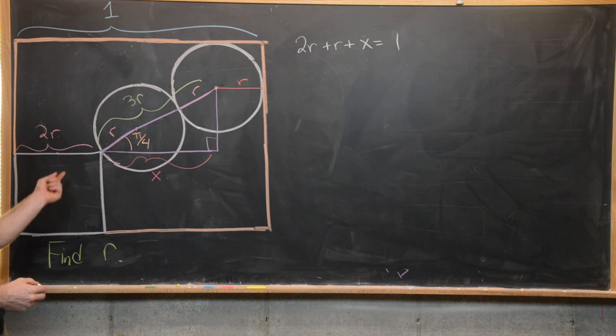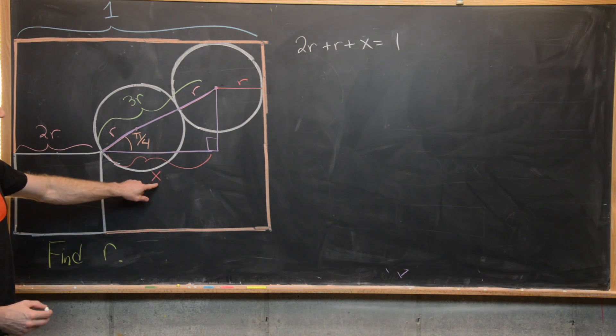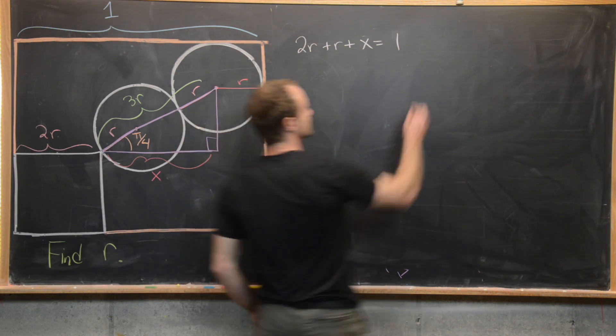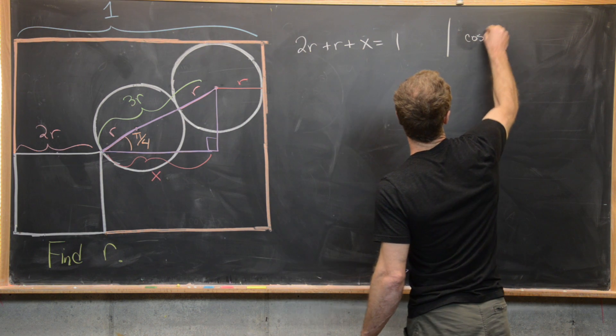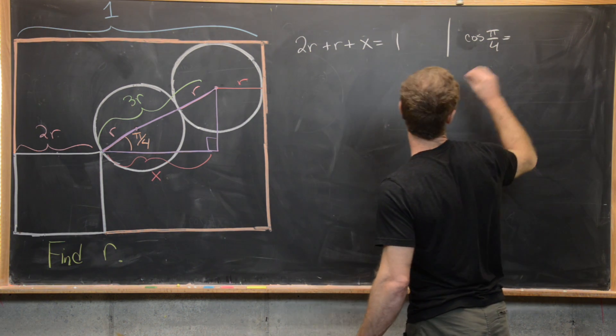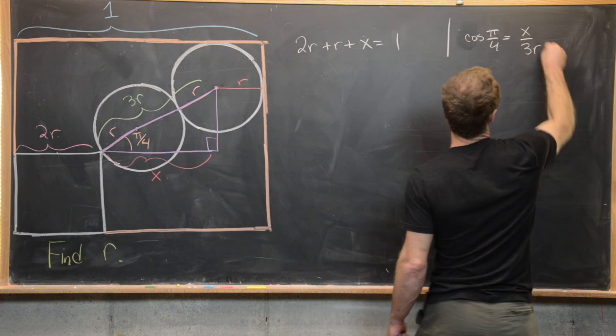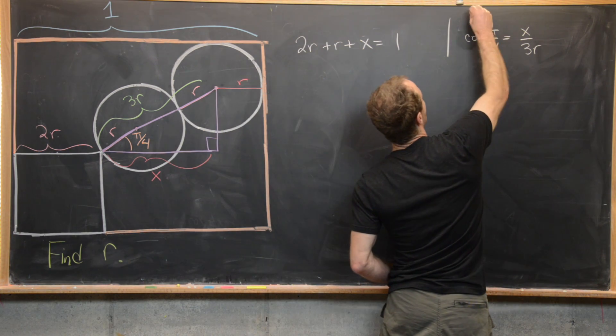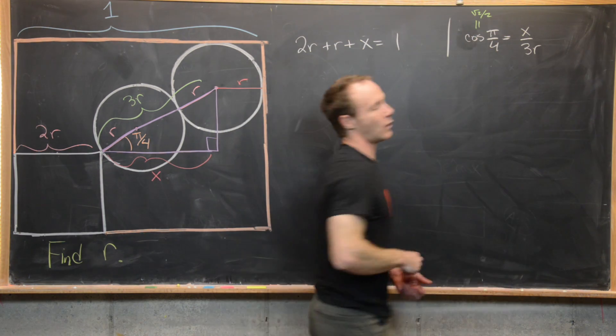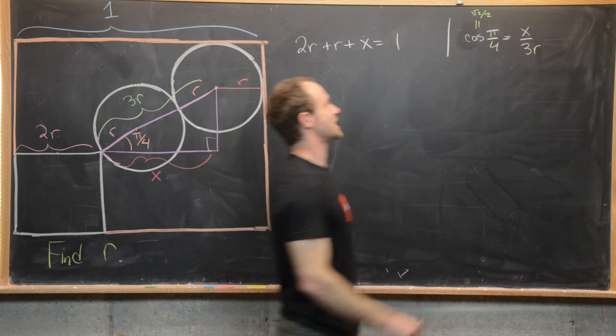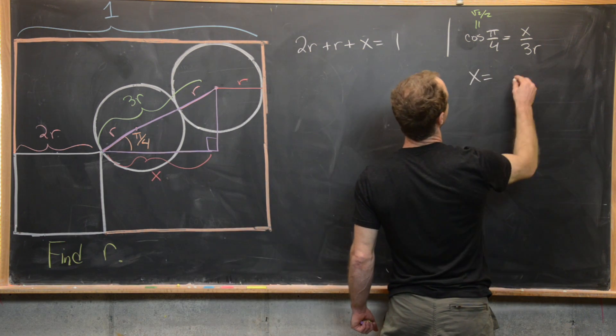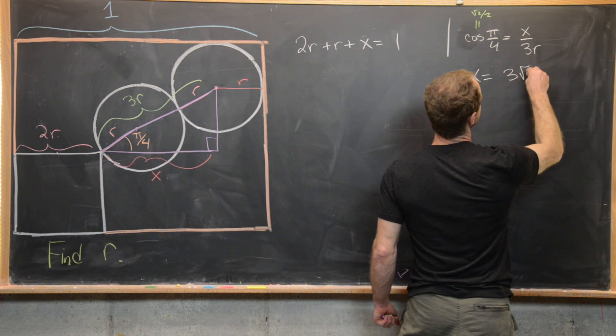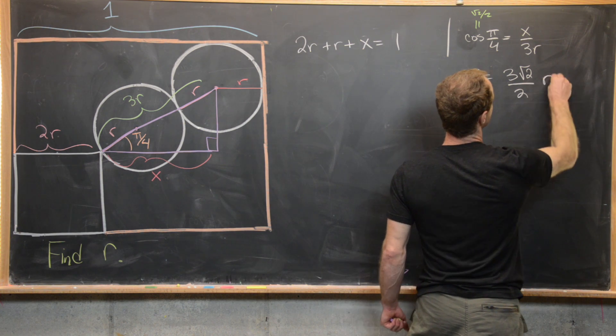So using the fact that cosine is adjacent over hypotenuse, that's going to tell us that the cosine of π over 4 is equal to x over 3r. But let's recall that cosine π over 4 is √2 over 2 or 1 over √2. And so that means we have x equals 3 times the square root of 2 over 2 times r.